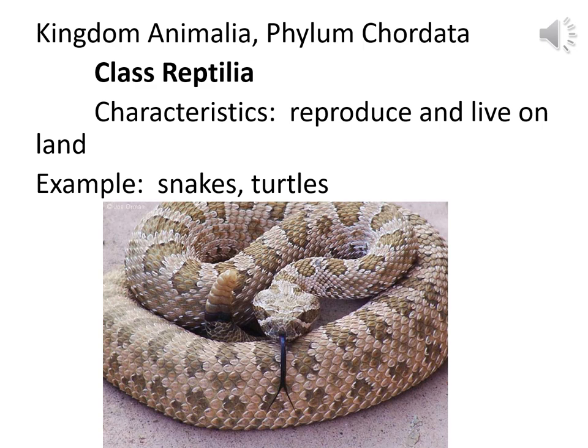Snakes and turtles are in Class Reptilia. Reptiles would reproduce and live on the land — although some sea turtles will reproduce on land and go to the water, as a group they reproduce on the land and live on the land, though usually near water. In lab we have two snake heads preserved in plastic — it's not a two-headed snake, but you're not in lab so you can't see it.